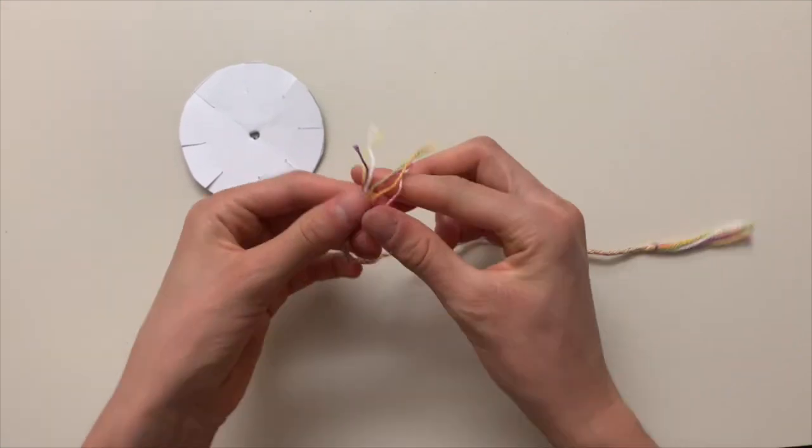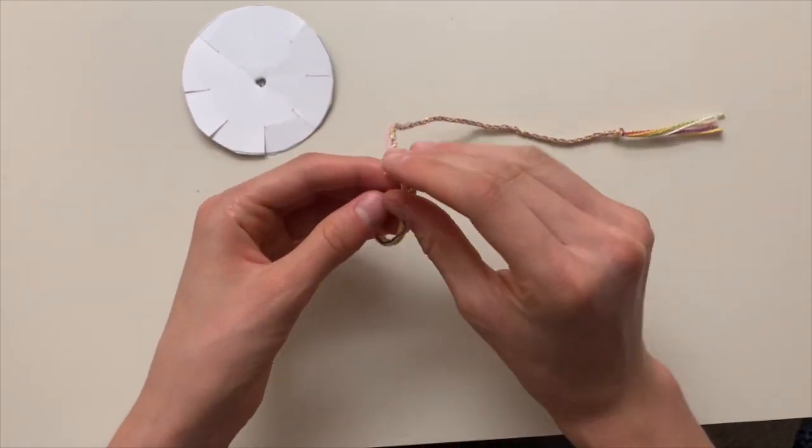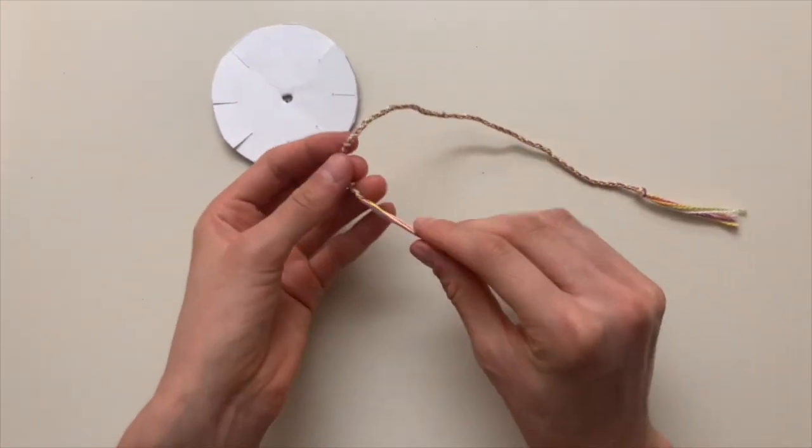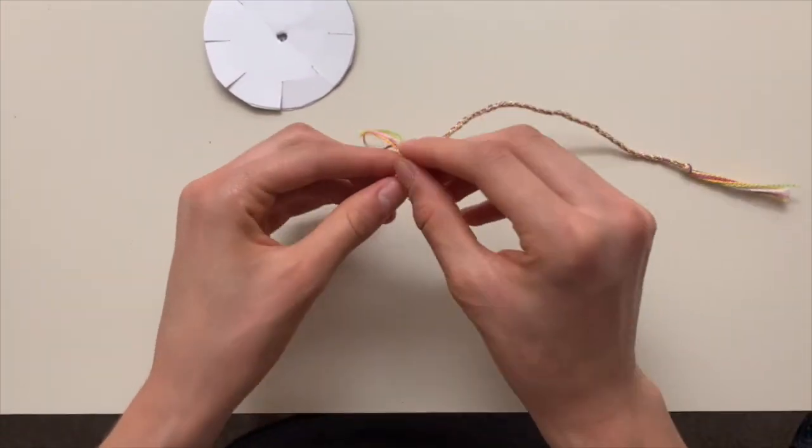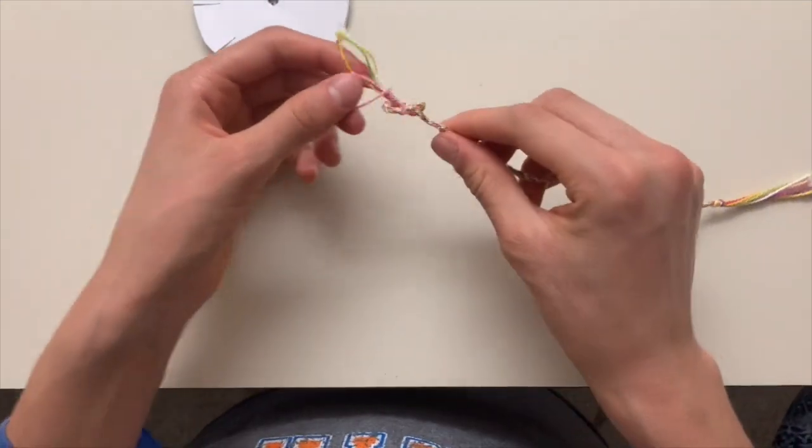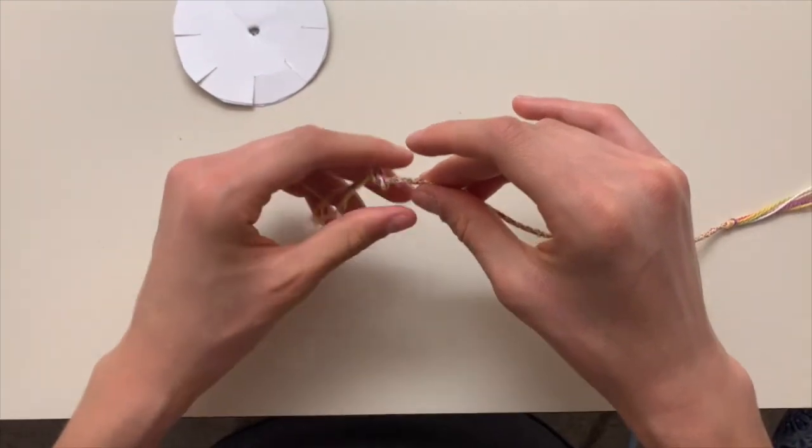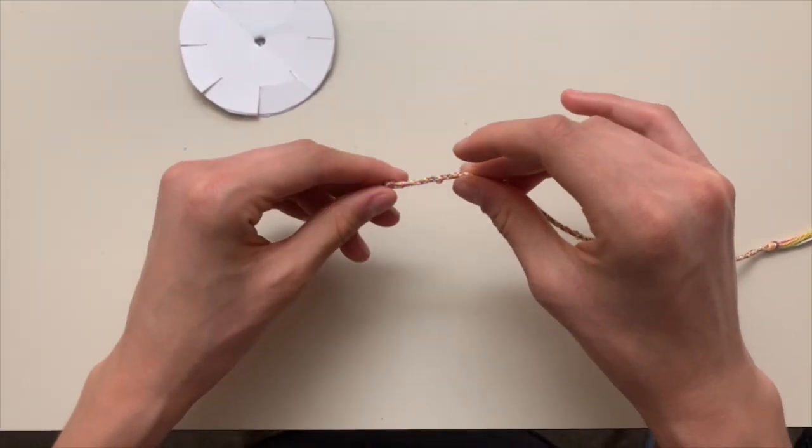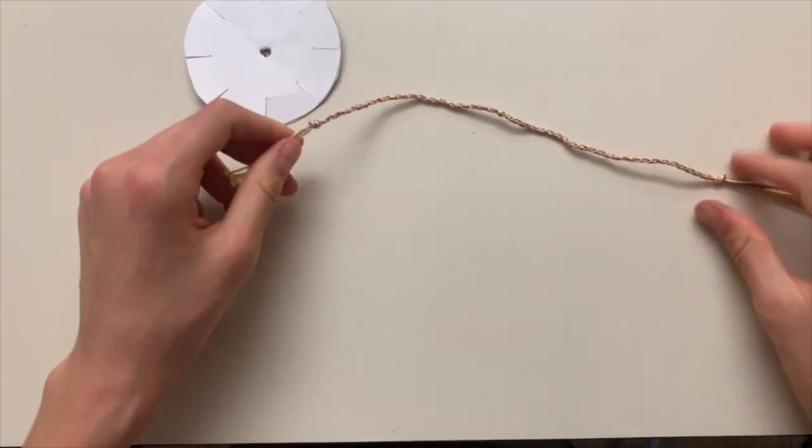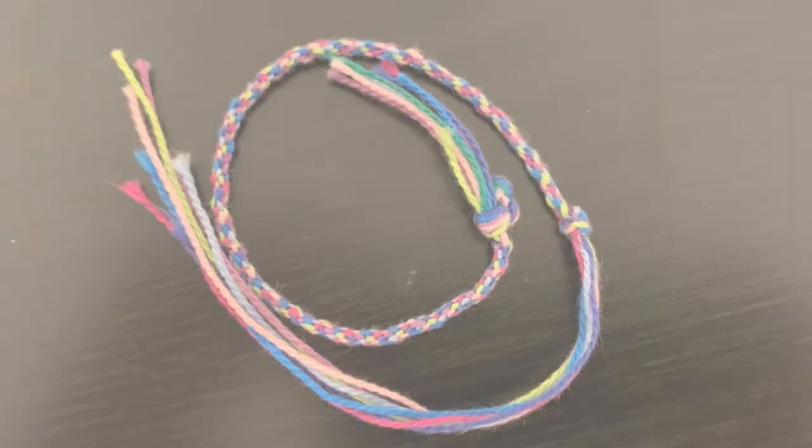Once your bracelet is as long as you'd like it, all you have to do is pull it out of the template and then tie it in a knot at the other end. Yay! You did it!